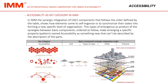In IMM, the synergic integration of CAS components that follows the order defined by the table shows how elements come to self-organize or to synchronize their states into forming a new specific level of organization. These types of emergence as product of the synergies between basic components make emerging a specific property, pattern, named accessibility as something new that can't be described by the description of the parts.